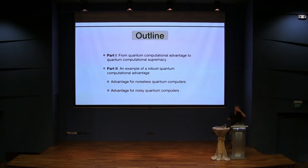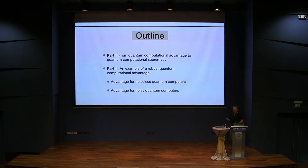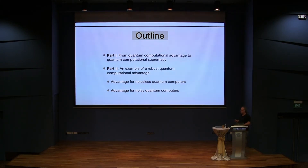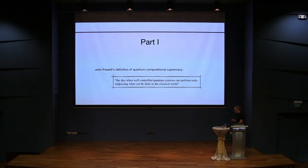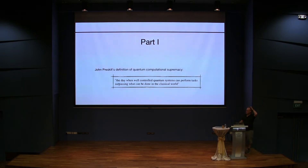So that was motivation and recent results. The topic of the talk is how do we come from quantum advantage to showing quantum computational supremacy. That's going to be the first part. Then I'm going to give an example of a problem where we can show a quantum computational advantage. So first, it's an issue of definitions, and there seems to be a lot of confusion about what these terms really mean.